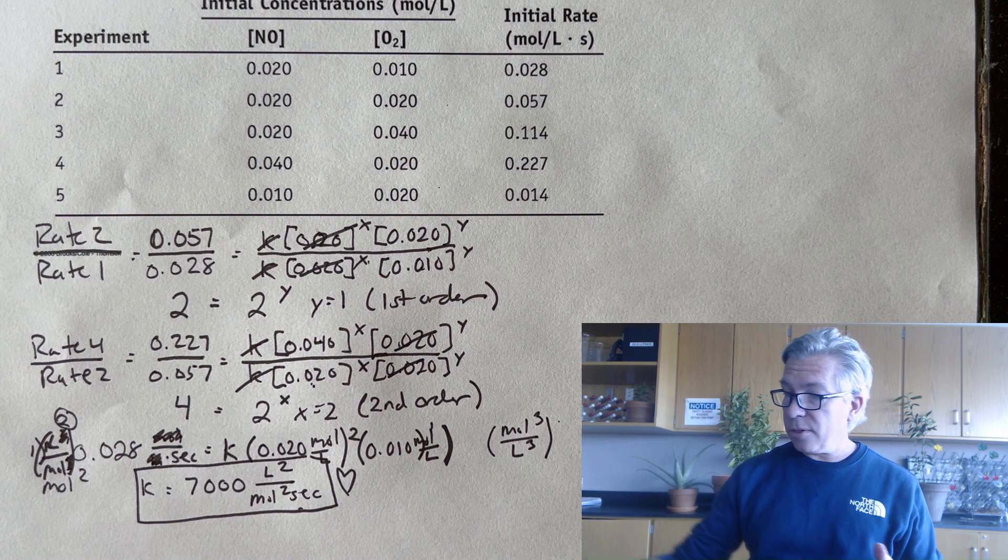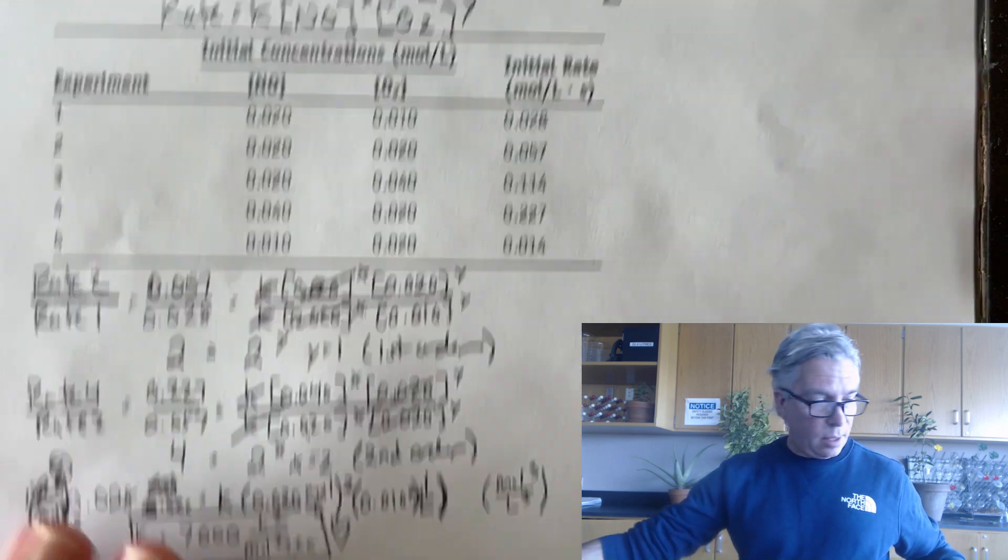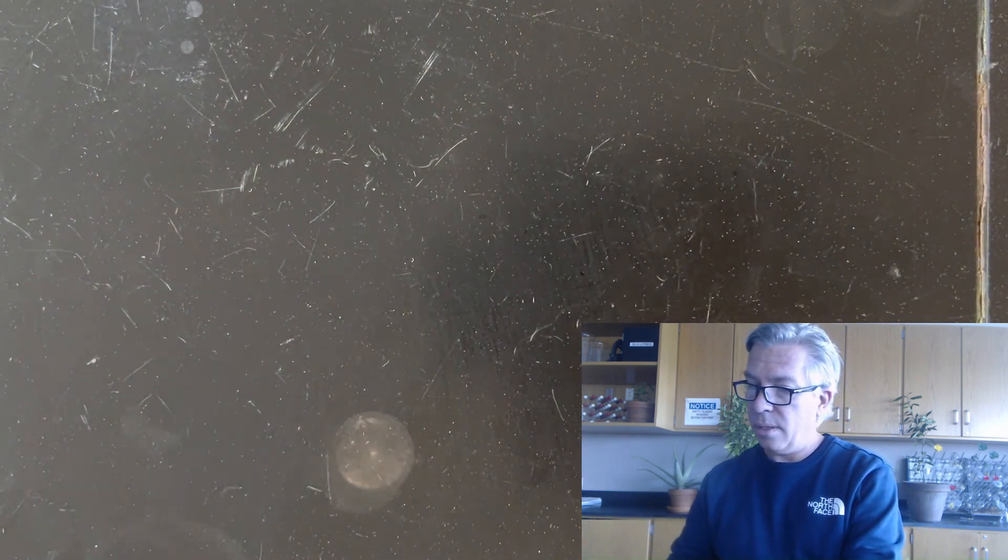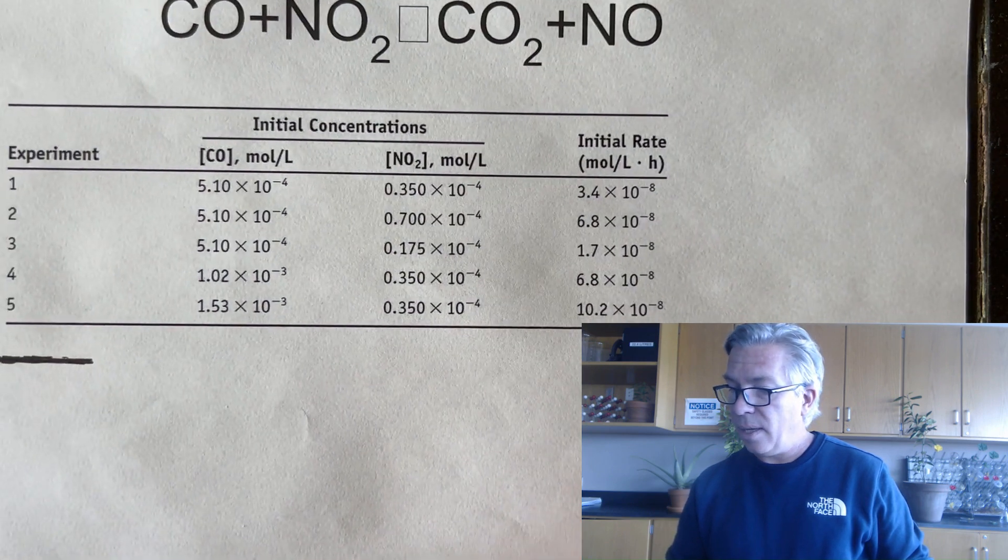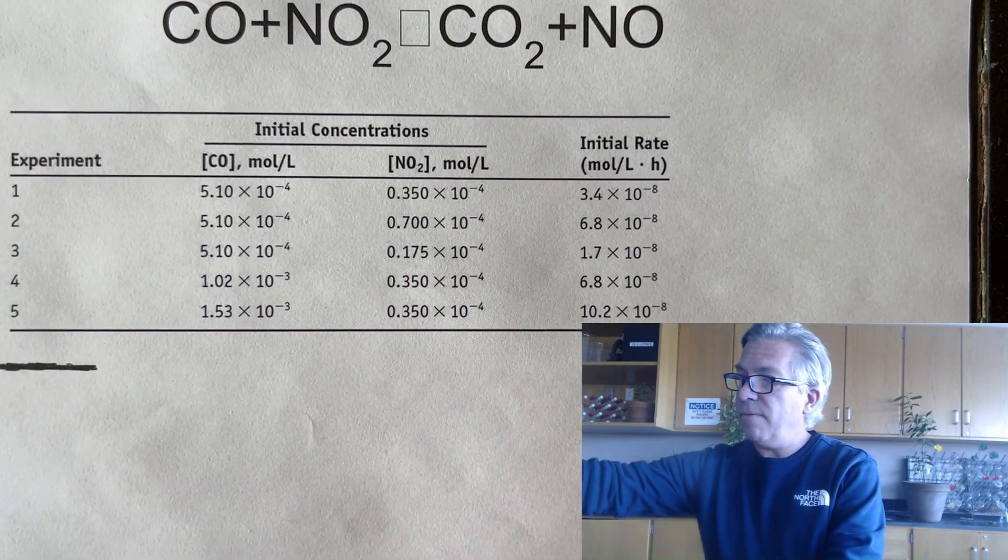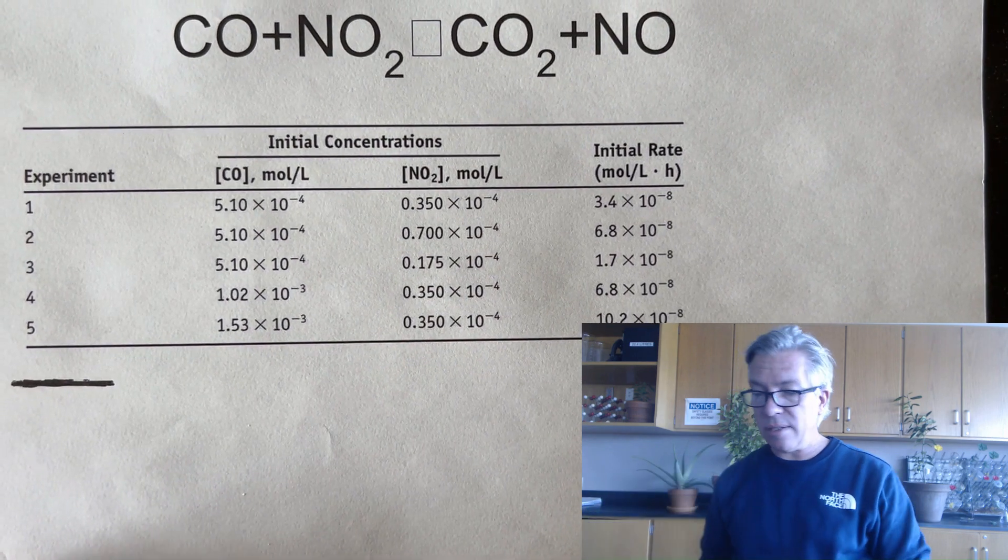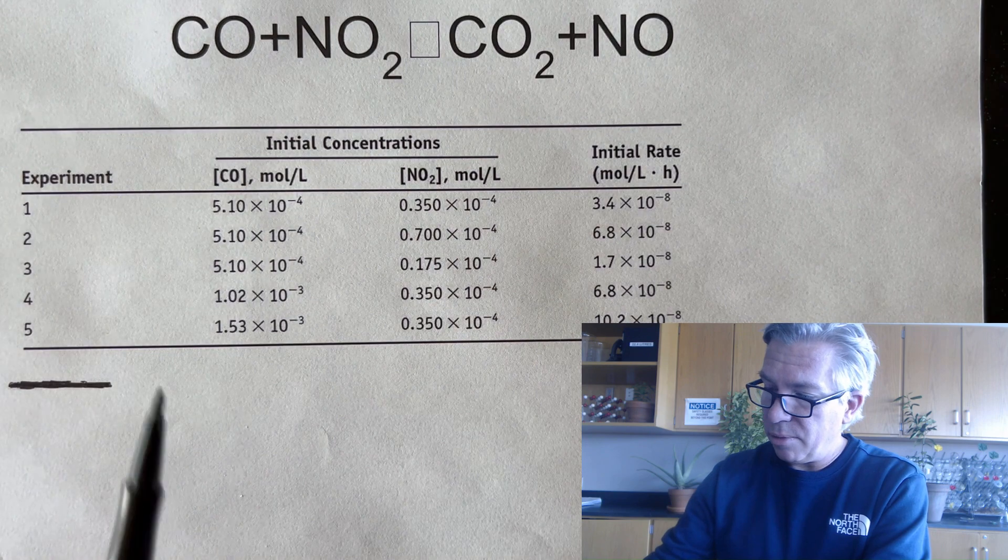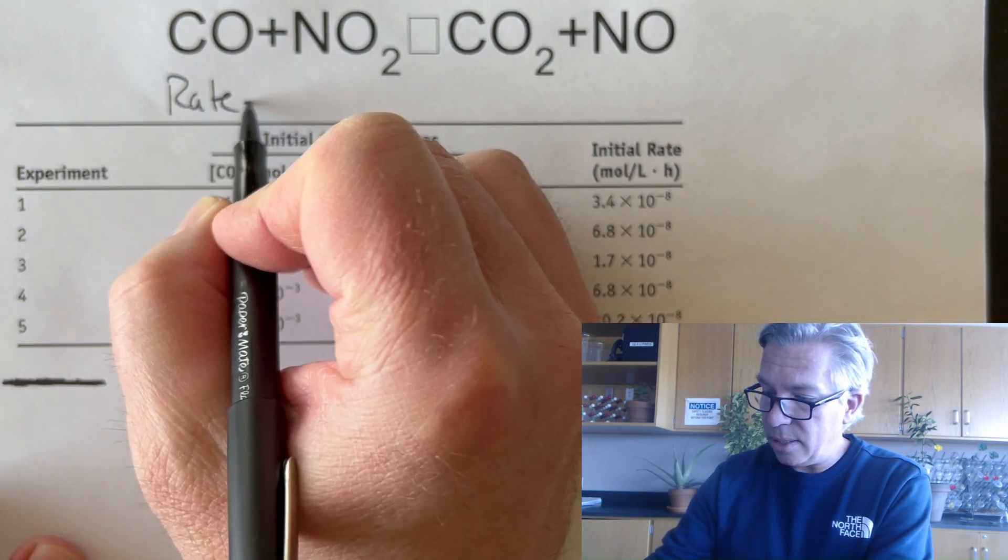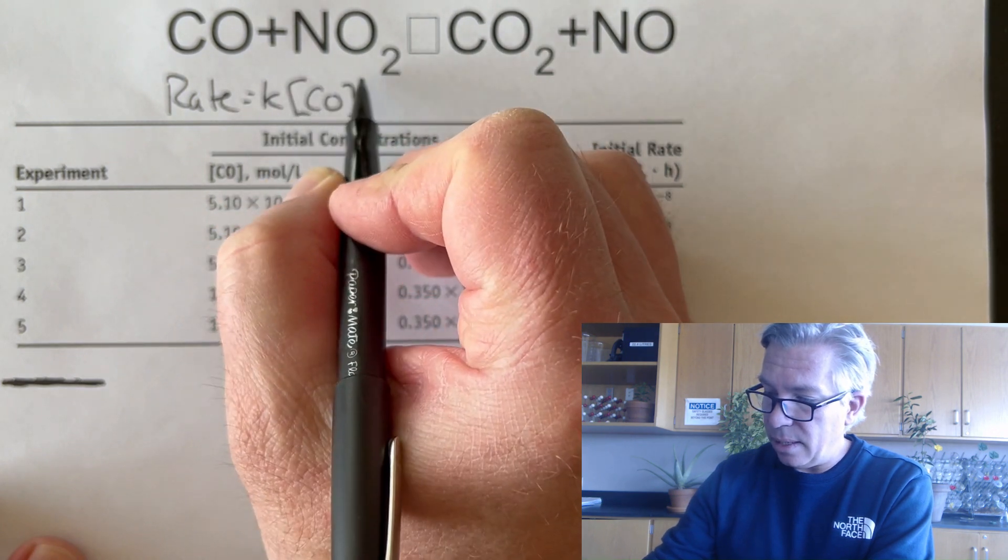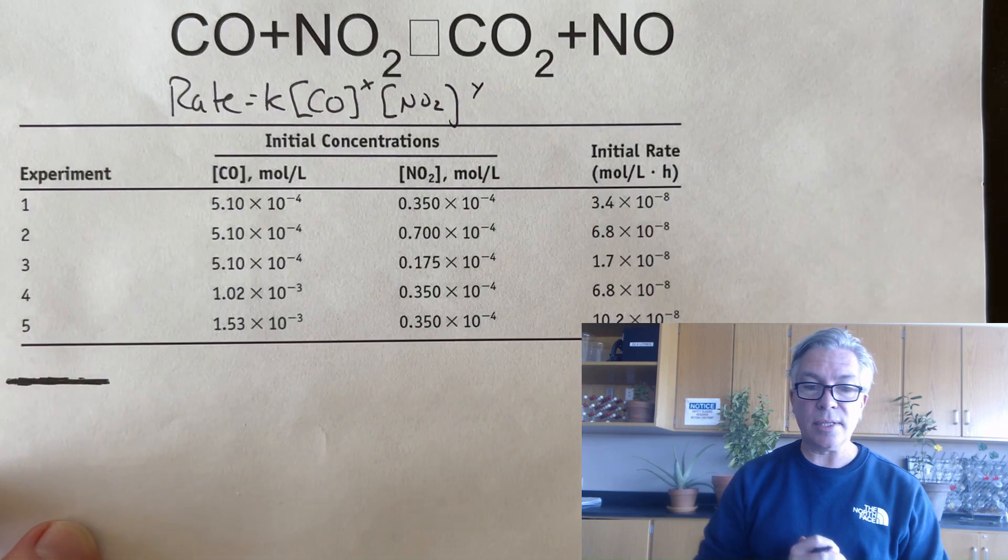There's my example. Now, for our first pause-the-video moment, I have a second example. If you feel so led, please take a moment and pause the video and see if you can find the appropriate rate law for this reaction: rate equals a constant times CO to the something and NO2 to the something. Pause the video and see if you can do it.